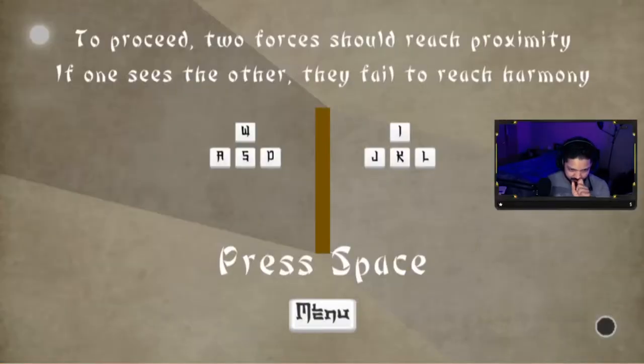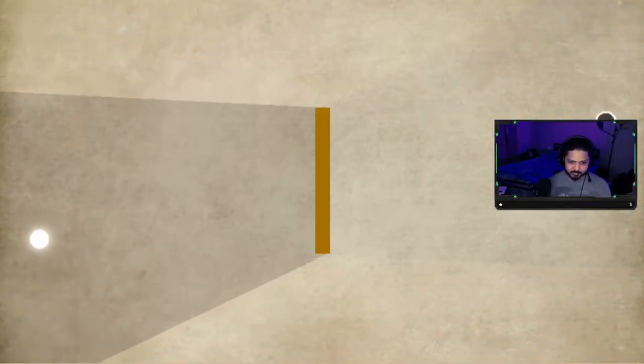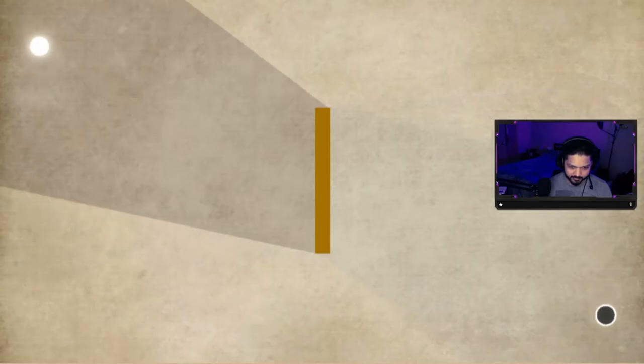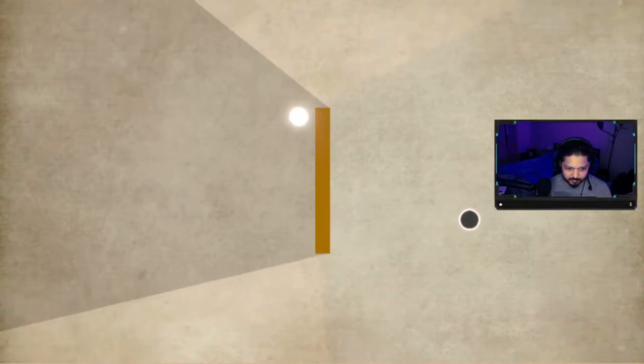Two forces should reach proximity. Okay, so I'm playing as two players basically. I don't know if you can see my mouse. Okay, cool. So this is the start, and I already forgot the key bindings for the right side, but we're gonna give this a shot. Okay, holy crap, they're just moving free-for-all.